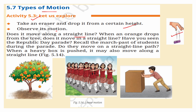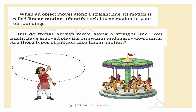When an orange drops from the tree, does it move in a straight line? Yes. Have you seen the Republic Day Parade? Recall the march past of students during the parade — they move on a straight line path. When a heavy box is pushed, it may also move along a straight line. These are examples of linear motion. When an object moves along a straight line, its motion is called linear motion.